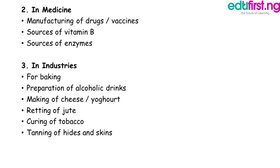Retting of jute: certain bacteria are used in the retting of jute to obtain soft fibres from flax plants. Curing of tobacco: bacteria are useful in the curing or processing of tobacco leaves. Tanning of hides and skin: the action of bacteria is useful in the conversion of hides and skin to leather during the tanning process.